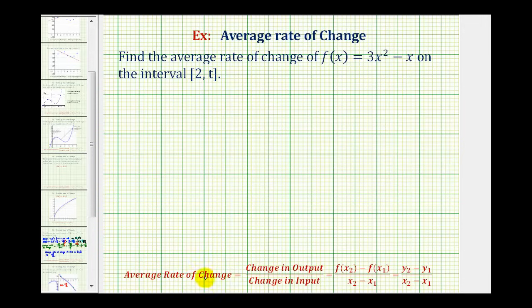To determine the average rate of change, we'll find the change in output (the difference in the function values or y-values) and divide by the change in input (the difference of the x-values). Notice that determining the average rate of change is the same as determining the slope between two points.